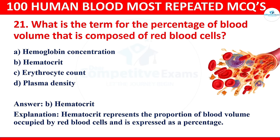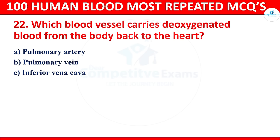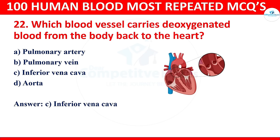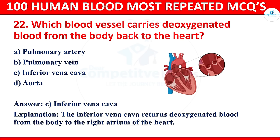Question 22: Which blood vessel carries deoxygenated blood from the body back to the heart? Options: pulmonary artery, pulmonary vein, inferior vena cava, or aorta. The correct answer is the inferior vena cava. The inferior vena cava returns deoxygenated blood from the body to the right atrium of the heart.